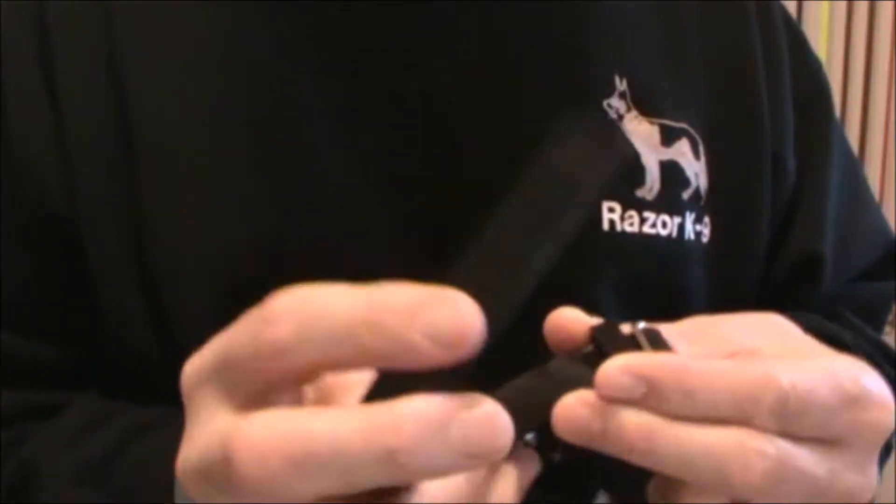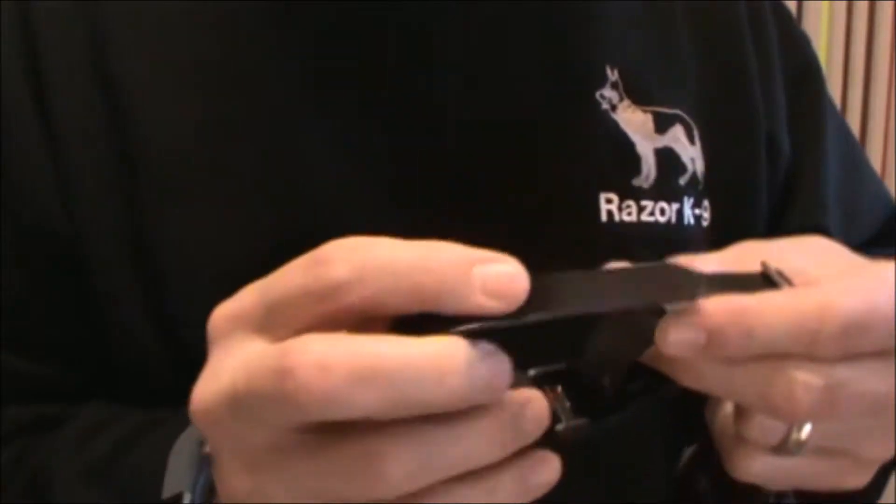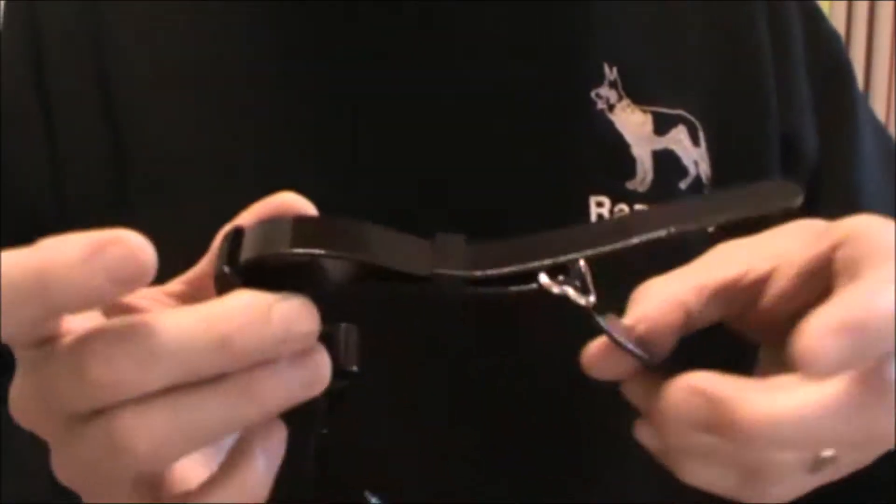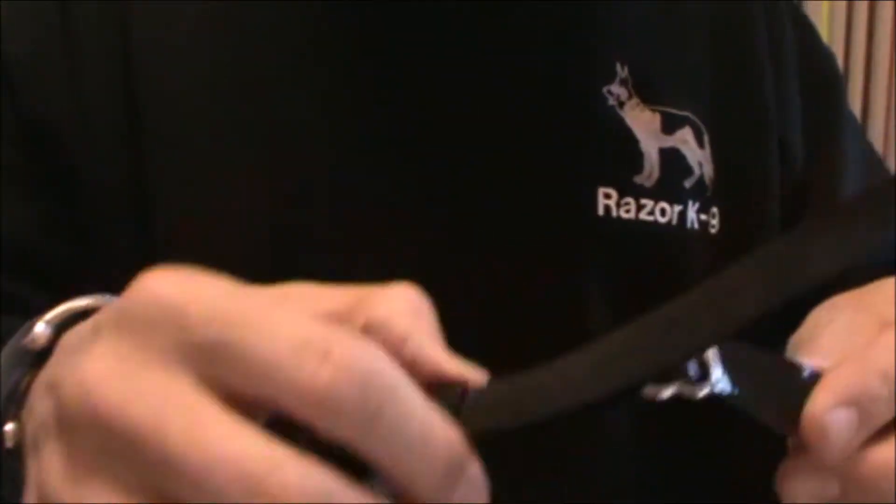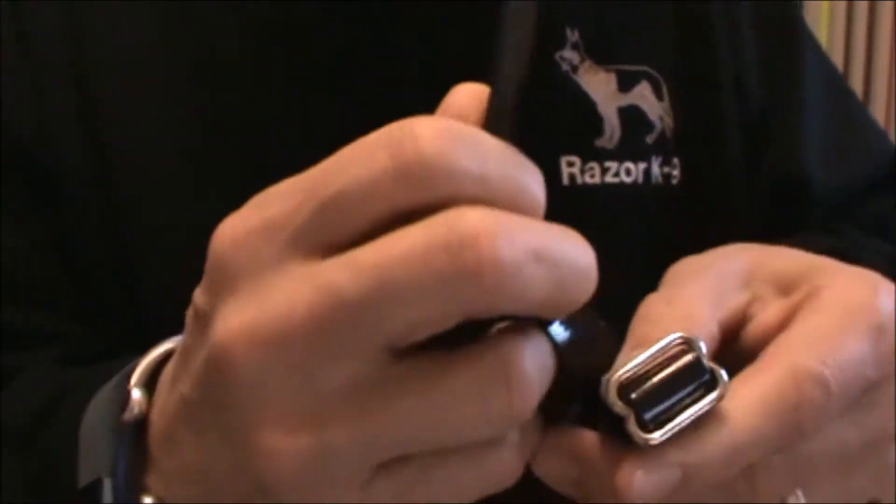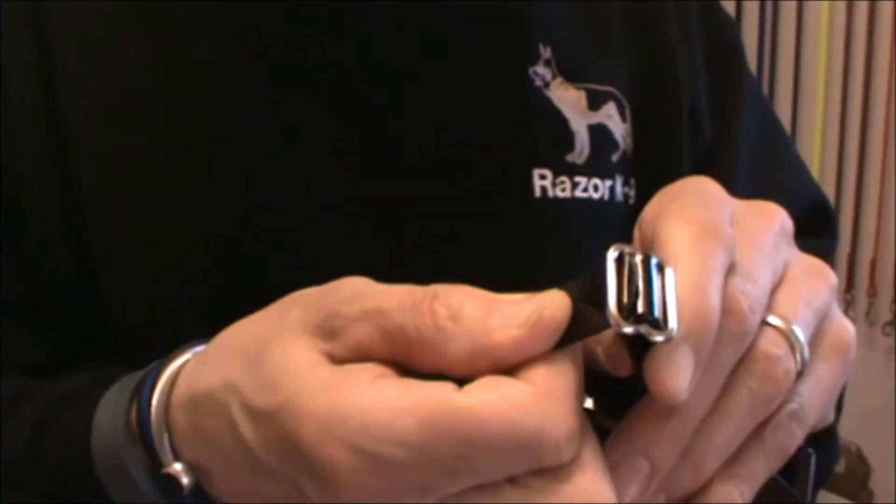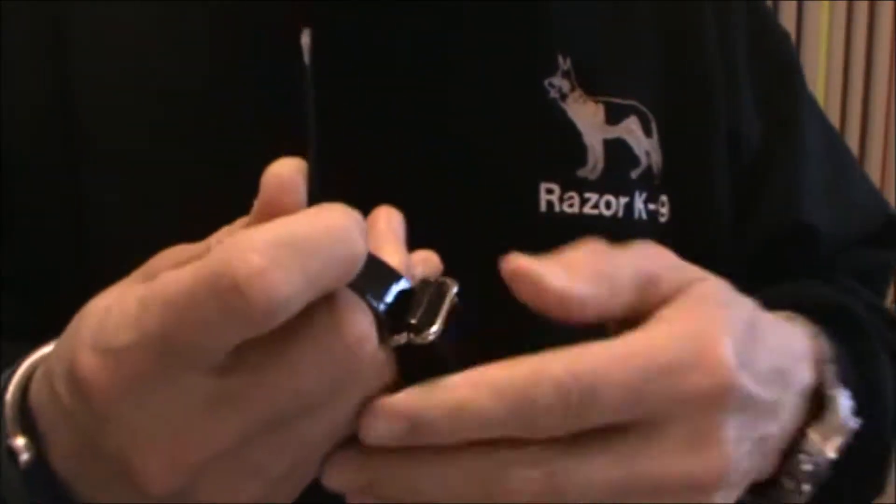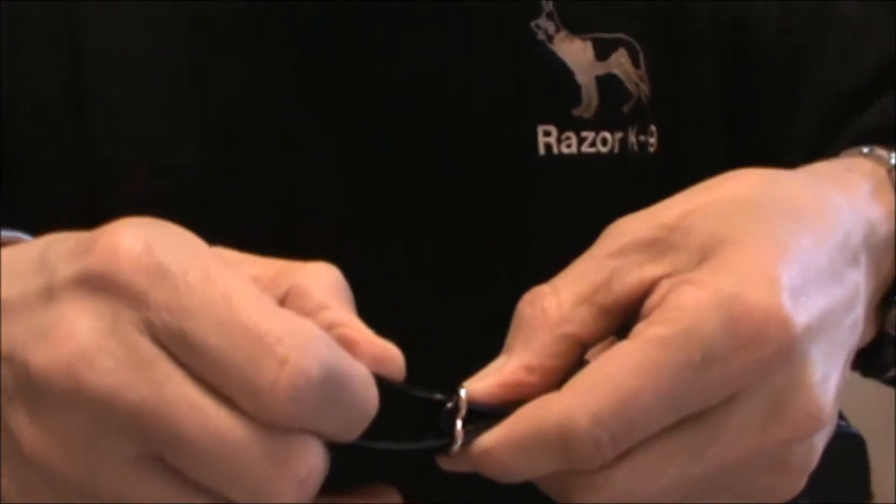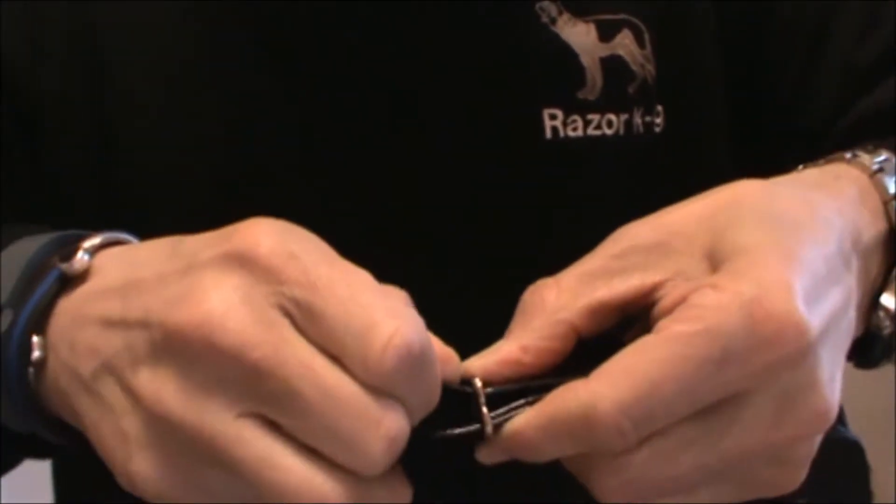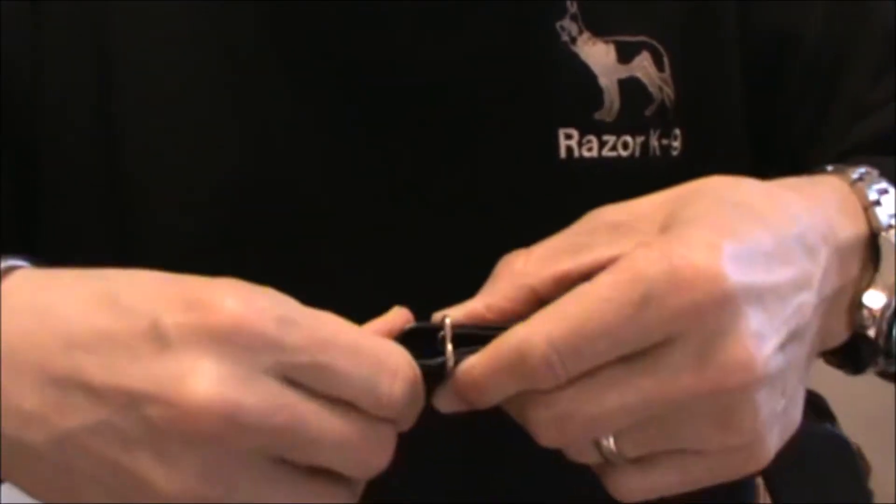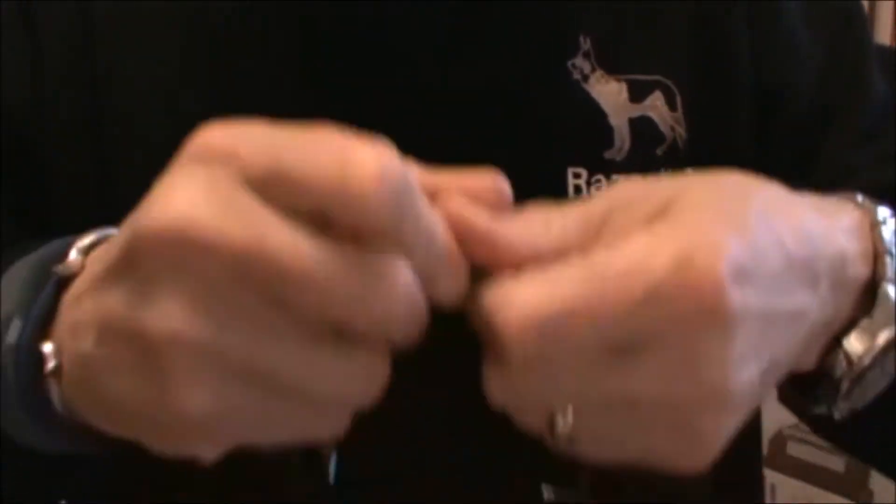The next step is to take the end of the material and pass it underneath the keeper, just like this. Finally, you're going to pass the end of the material into the metal slide, on one side and then the other, just like this. It's a little easier if you wet this material first, but you can see without being wet, it'll still work.